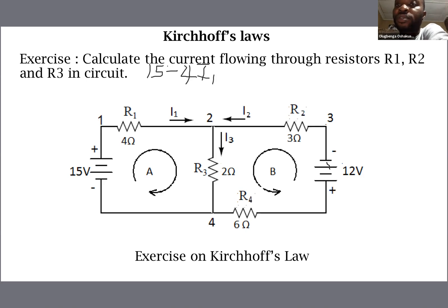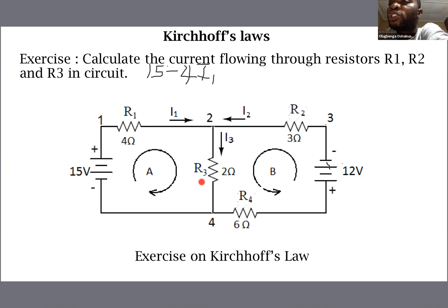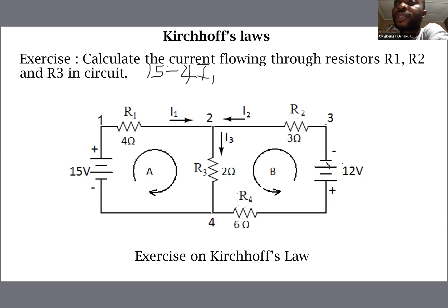Continuing past R1, we now reach R3. Current I3 flows through R3, which is 2 ohms, so the voltage drop is 2·I3, giving us minus 2I3. Since the direction of I3 agrees with our loop navigation direction, we write minus 2I3, and the complete Loop A equation equals zero.